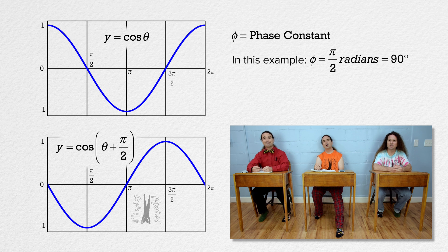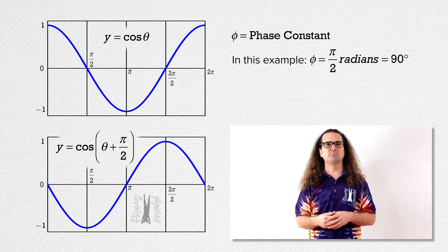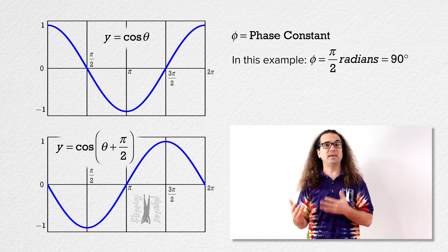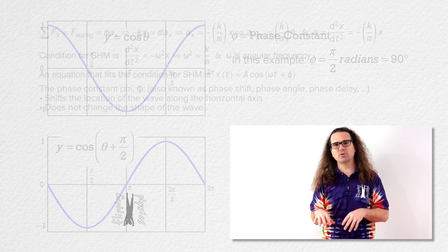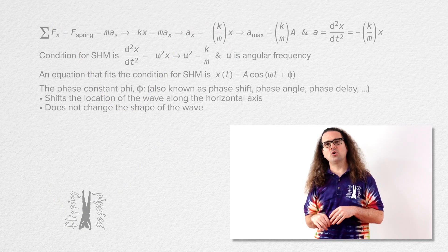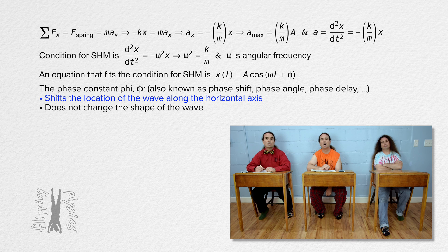I thought phi was the phase angle. I've heard it called phase delay. Phi has a lot of names — most often I have heard it called phase constant or phase shift. The most important thing to know is that it shifts the sine or cosine wave along the horizontal axis; however, it does not change the shape of the wave.